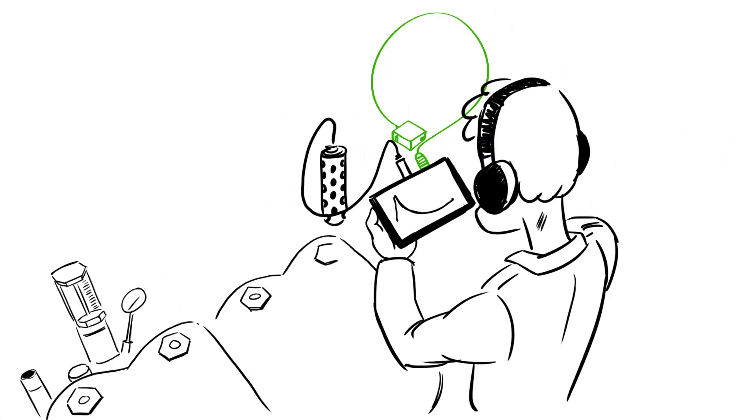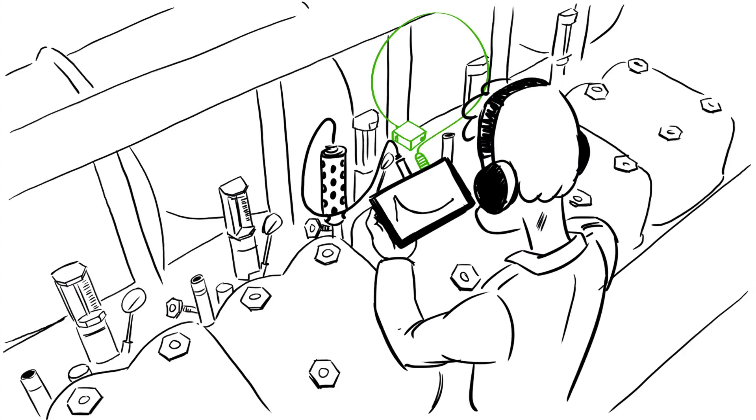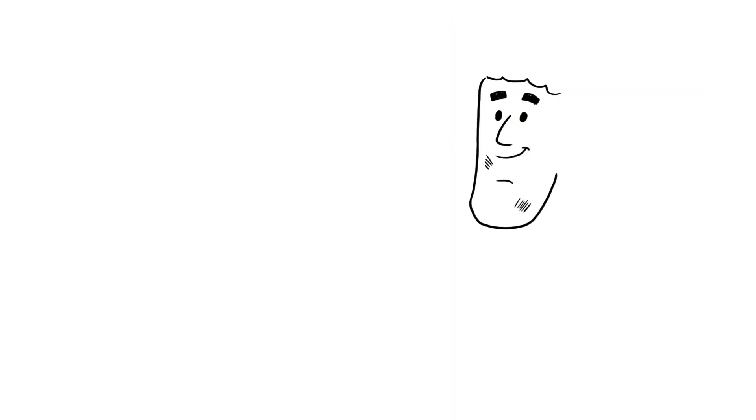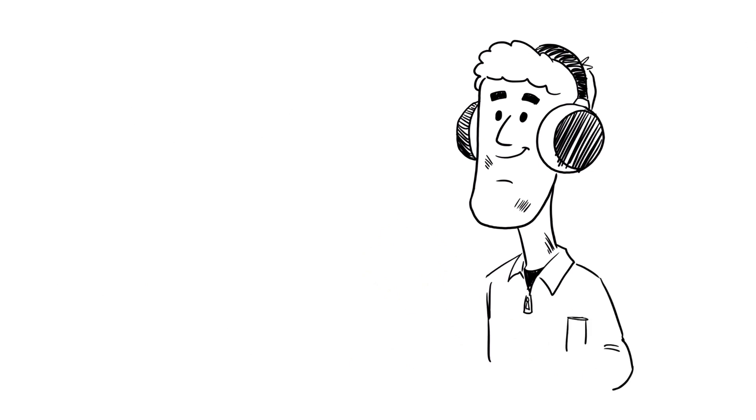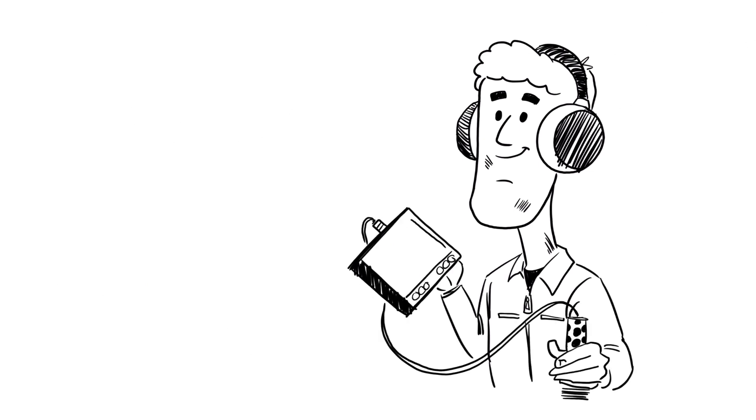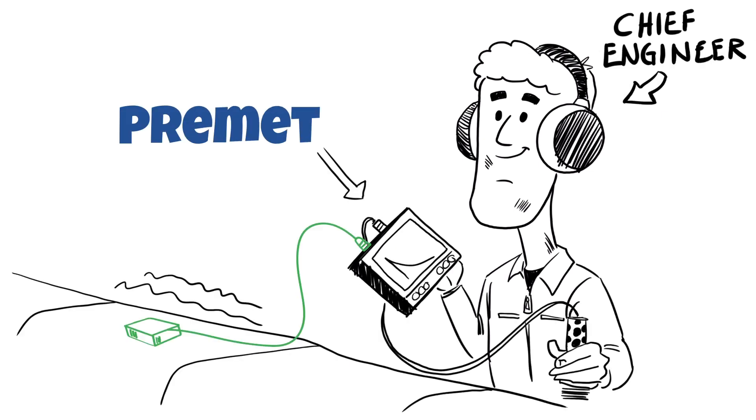You can use either sensor individually or both sensors together. Select the measurement screen and refer to the video on how to use the Primit X to select the acoustic emission sensor and start a measurement.